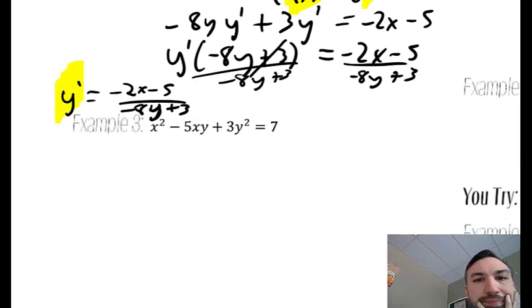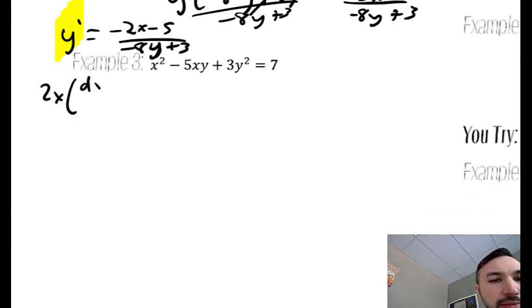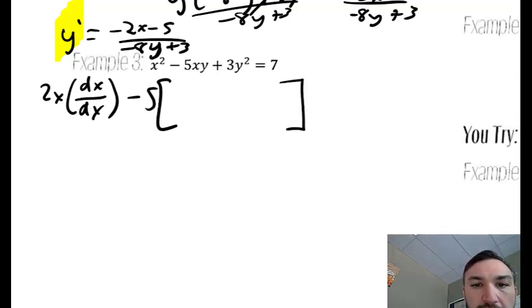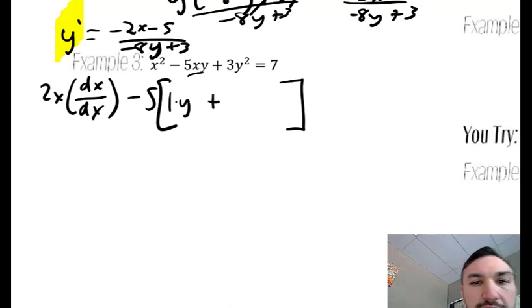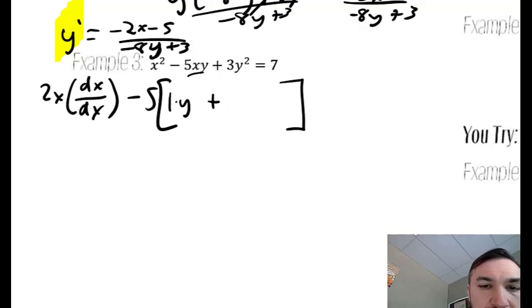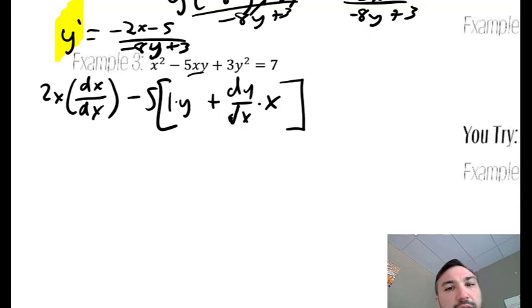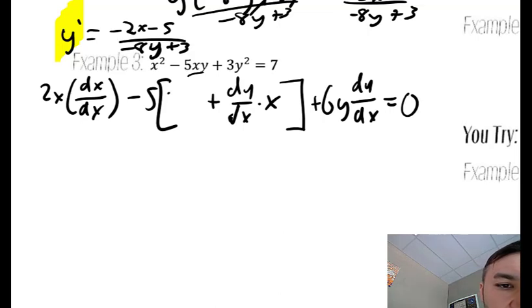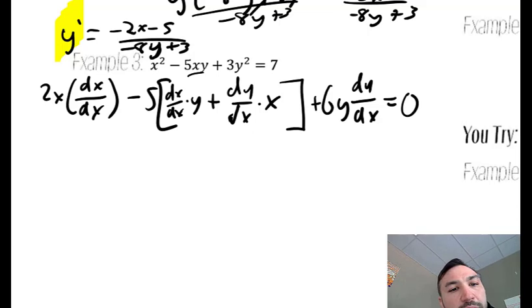So let's do that again on number 3. The derivative of x squared is 2x, and I'm taking the derivative of x with respect to x. The derivative of xy — we're going to have to use the product rule. So I take the derivative of x with y left alone, plus the derivative of y — which would be 1 — times dy/dx, with x left alone. Over here, the derivative of 3y squared would be 6y dy/dx, and the derivative of the constant is 0.